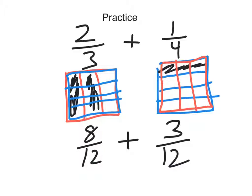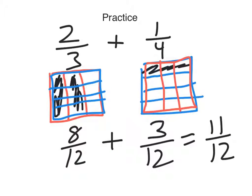And again, it'll be eight twelves plus three twelves is eleven twelves. Again, that's eight twelves plus three twelves equals eleven twelves.